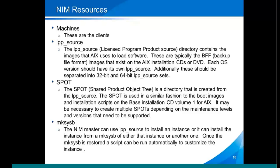So let's talk about NIM resources. The first thing we have is what they call machines — a machine could be a physical machine or an LPAR. Since in the Power world nowadays everything's an LPAR, you can assume that a machine is just an LPAR of some kind — basically the clients. The LPP source is a directory that's going to contain all of the images AIX uses to load software. Each version and technology level that you want to define would be in a separate directory with a NIM name that refers to it. These are basically the BFF images from the AIX installation CDs and DVDs. We then have what's called the spot — the shared product object tree — which is actually created from the LPP source, except in the case of a VIO server where it is created from the mksysb image of the VIO server. The spot is used in a similar fashion to boot images and installation scripts, and is created one for each version and maintenance level you want to support. Lastly, the mksysb — I can basically take a mksysb of a server, or create a mksysb image, and use that to actually install other instances. You load that mksysb into /NIM/images, do a definition of a mksysb resource, and it then becomes something you can use.